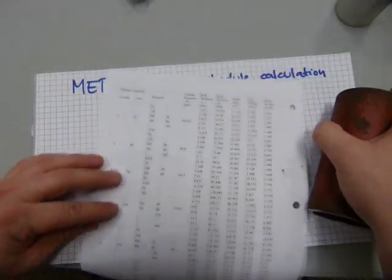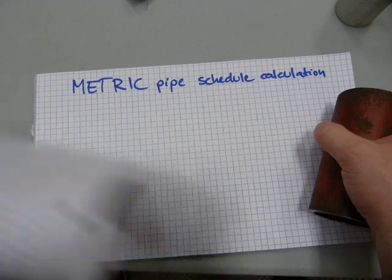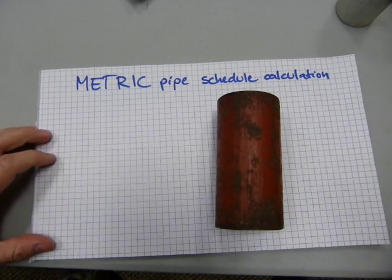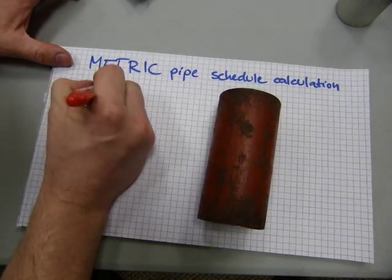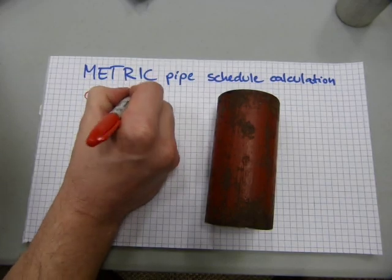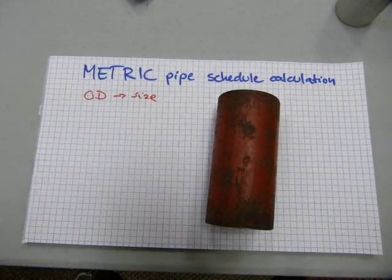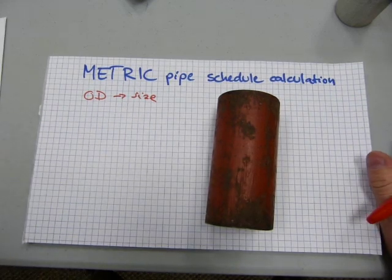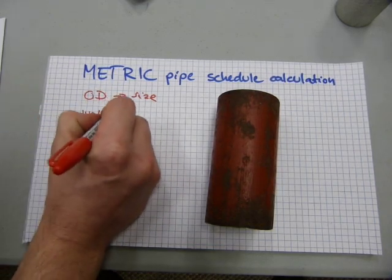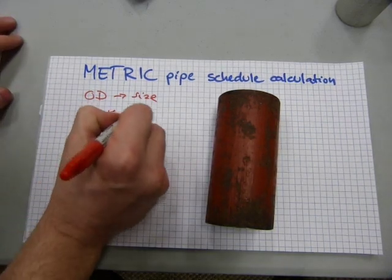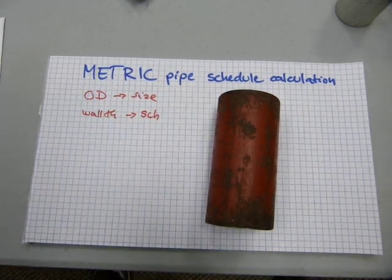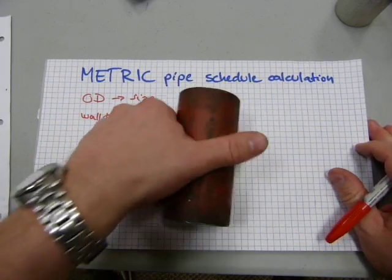The pieces of information that you need are all in the pipe schedule. First off, what you need to get the calculation done is the outside diameter of the pipe to conclude or to learn what size the pipe is. You need the size of the pipe to look up the appropriate rows and columns in the table. You need to measure the wall thickness to learn what schedule the pipe is so you can find the appropriate data in appropriate rows and columns.